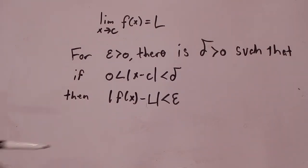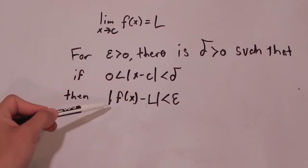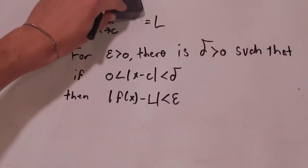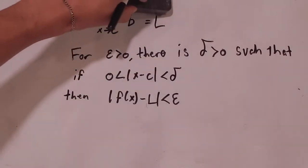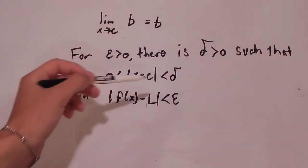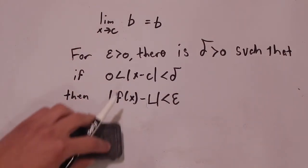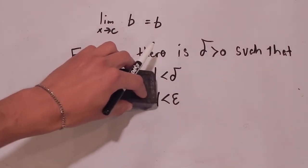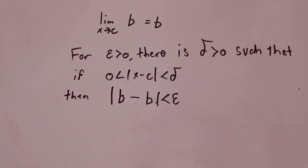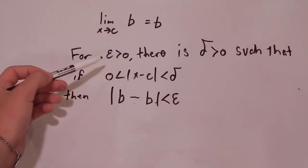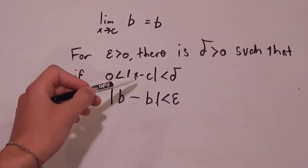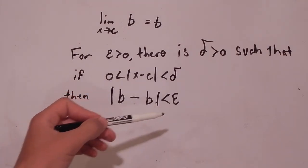Your entire goal is basically to say that when this statement is true, this statement is also true. So now we have to apply this to our actual situation. We have f of x being b, and we have L being b. So in order to prove that this limit exists, we have to prove that these two statements are also true. We apply it to our specific situation: we have to prove that for any epsilon greater than 0, there is a delta value such that when the absolute value of x minus c is greater than 0 but less than delta, then the absolute value of b minus b is less than epsilon.